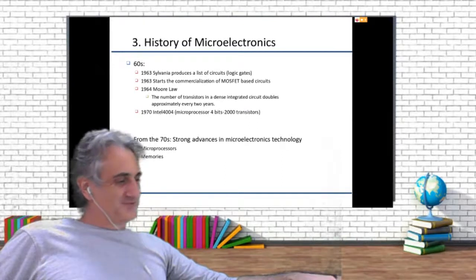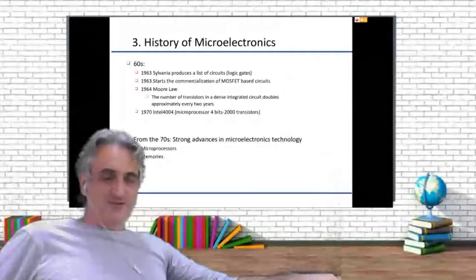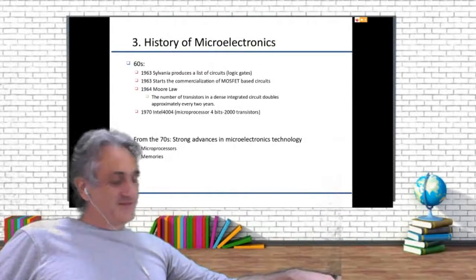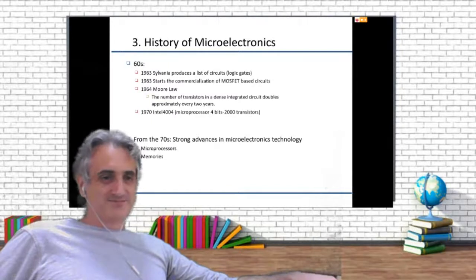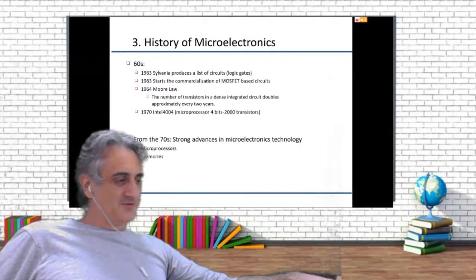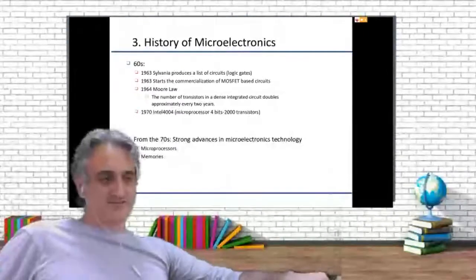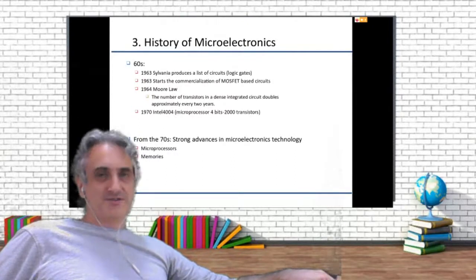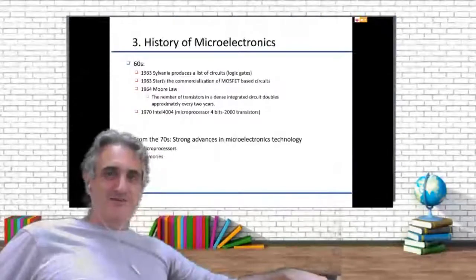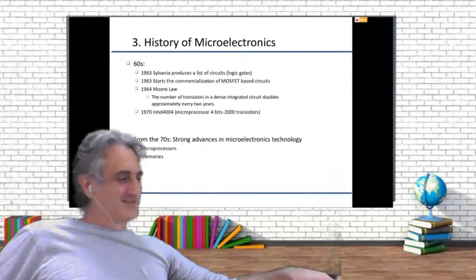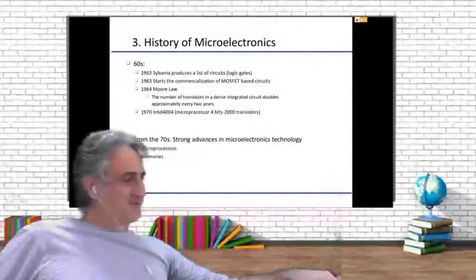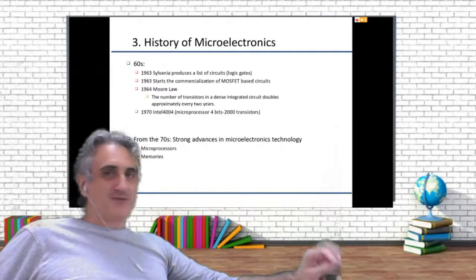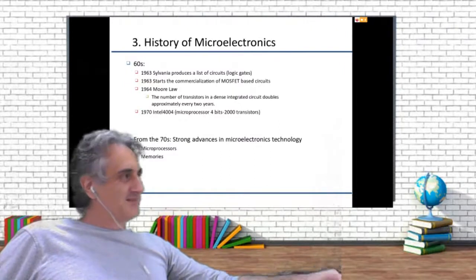Gordon Moore was the founder of Intel. He was a very good engineer. By the way, do you know what the common point is between the founders of Intel, Google, Microsoft, Alphabet, Tesla, Ford, General Motors? They are all electrical engineers. So now you know what's expected of you — you can build multi-billion dollar companies. Gordon Moore made an observation that the number of transistors in a circuit more or less doubled every two years.